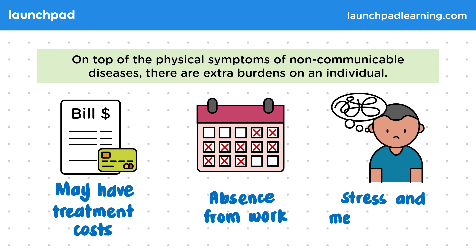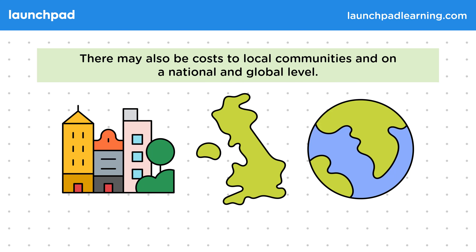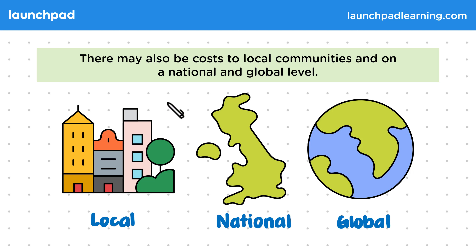There may also be costs to local communities and on a national and global level, so there are social and economic impacts of disease. You could be asked to discuss the human and financial cost of non-communicable diseases to an individual, a local community, on a national level, or even on a global level. So it's important that you know some examples. Let's start by having a look at some of the impacts on a local level.